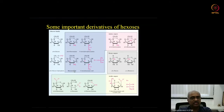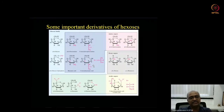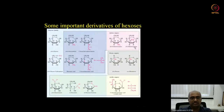Another derivative is muramic acid, formed when glucosamine carries a lactic acid substituent at C3, often also bearing an N-acetyl group to give N-acetylmuramic acid. This is a very important component of the bacterial cell wall.